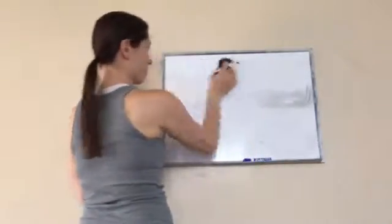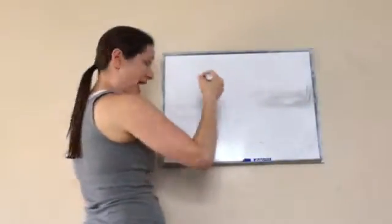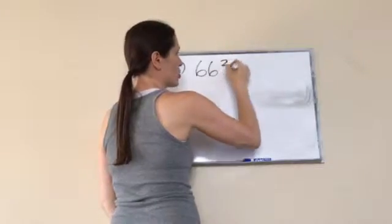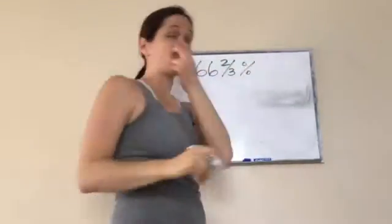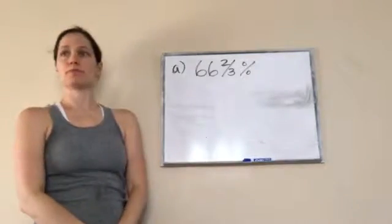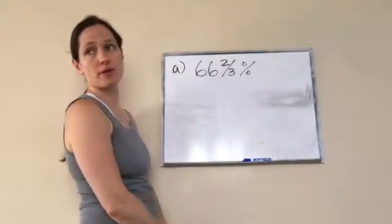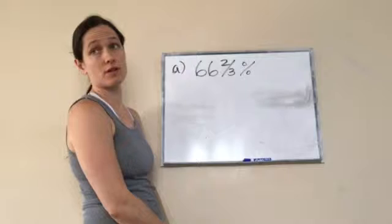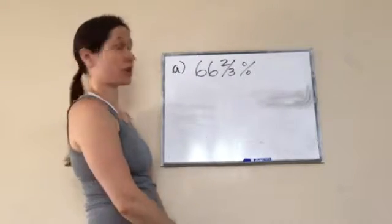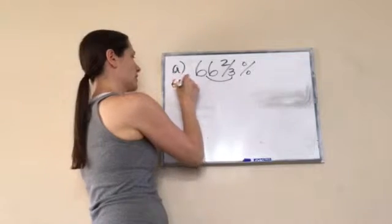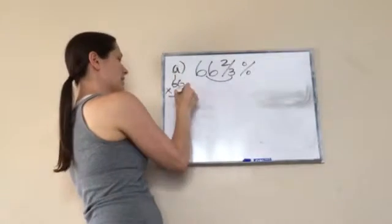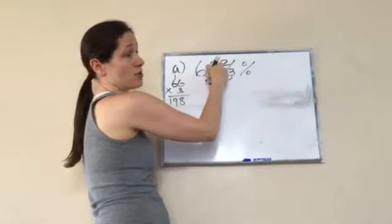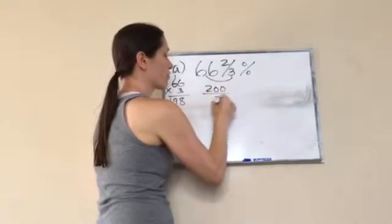So, this is A on your lesson practice, so you don't have to do it. Convert 66 and two-thirds percent into a fraction. What's my first step? I think you would make it into an improper. Very good. So, let's go and do that. 66 times 3. 6 times 3 is 18, 6 times 3 is 18. 198 plus 2 is 200. 200 over 3 percent.